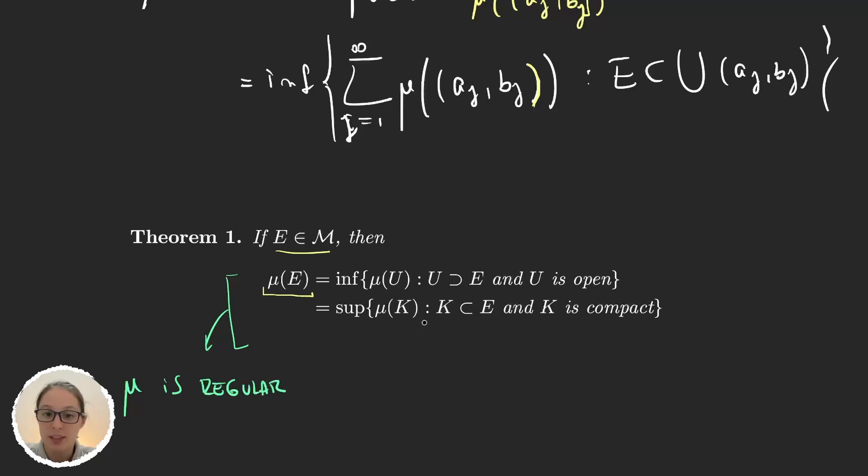If it satisfies only the second one, then we say that the measure mu is inner regular. And if it satisfies this other one with the open sets, then we say that the measure mu is outer regular.